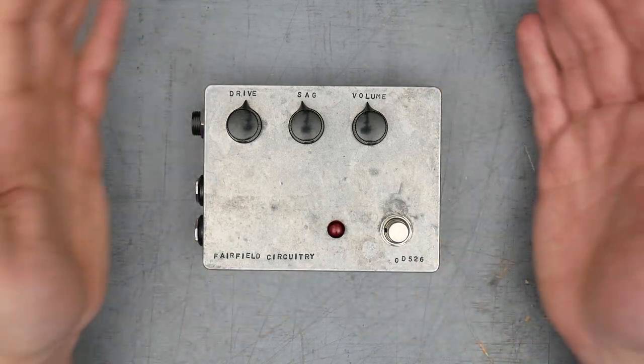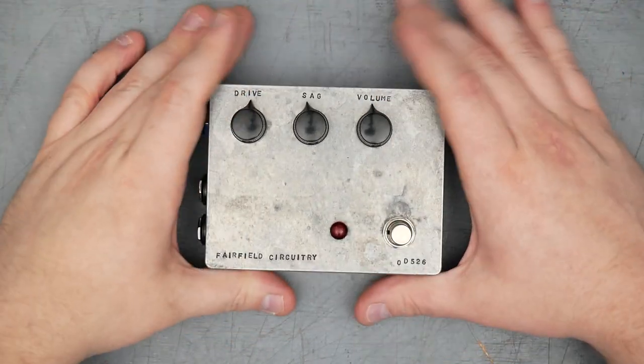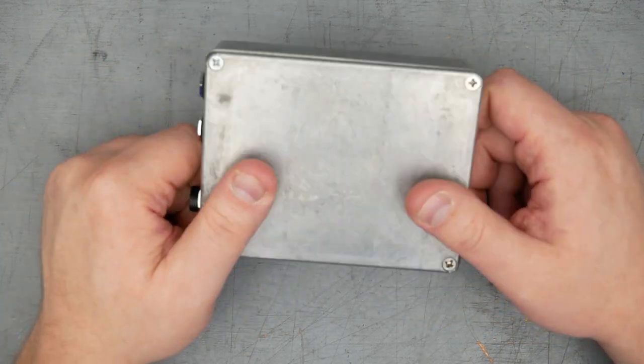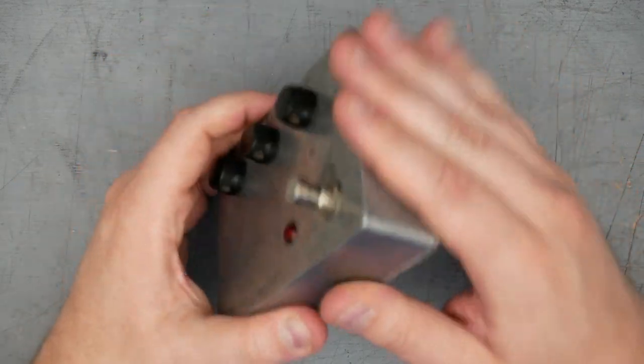Barbershop version 1 here, obviously larger enclosure, 1590BB enclosure. I can already tell just looking at this, this is one of the Hammond enclosures because it's got that cleaner finish. It's a little smoother and the edges are more neat.